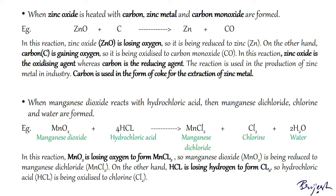Next example: when manganese dioxide reacts with hydrochloric acid, manganese dichloride, chlorine, and water are formed. In this reaction, MnO₂ (manganese dioxide) is losing oxygen to form manganese dichloride, so it has been reduced. On the other hand, HCl is losing hydrogen to form chlorine, so hydrochloric acid has been oxidized to chlorine. In this reaction, manganese dioxide is the oxidizing agent, whereas hydrochloric acid is the reducing agent.